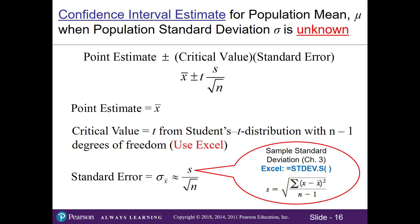If you forget any of these symbols, you can find them on our glossary on our Canvas homepage. Our point estimate is still our sample mean, but in order to get the critical t value, we have to use Excel. Note that there is an appendix F in the back of the textbook that our chapter shows us how to read, so if you prefer to use the appendix you can. But I'm going to show you how to do it in Excel.